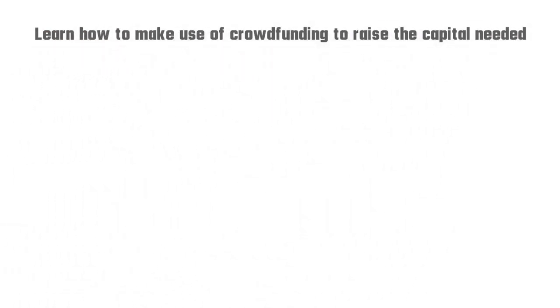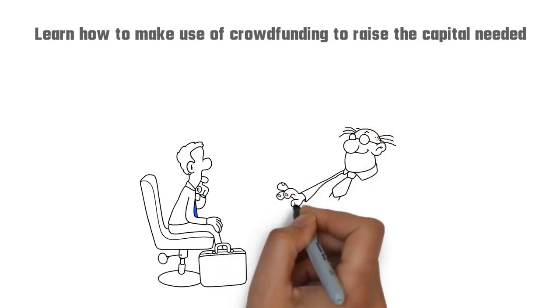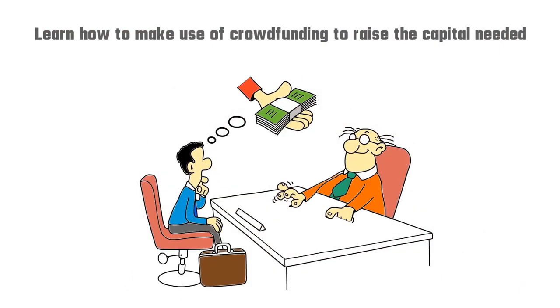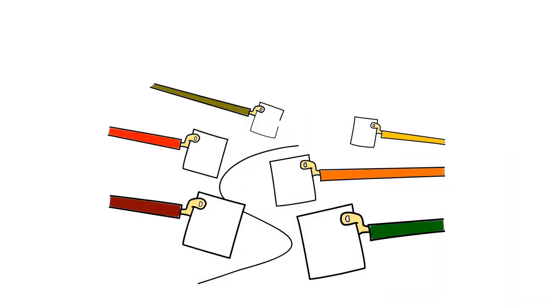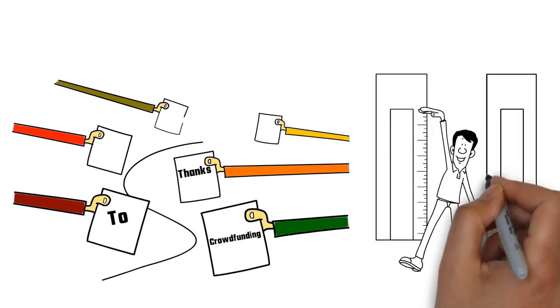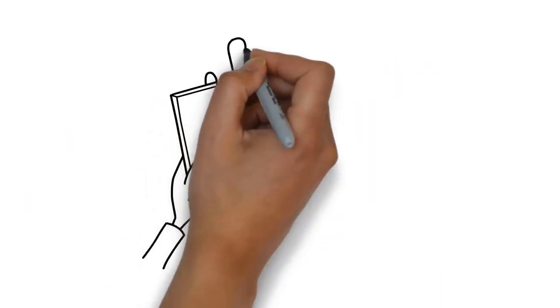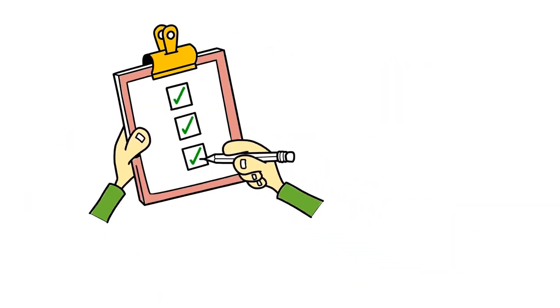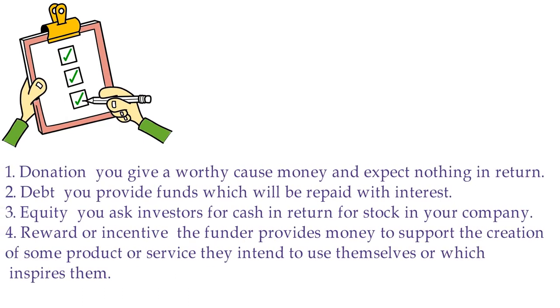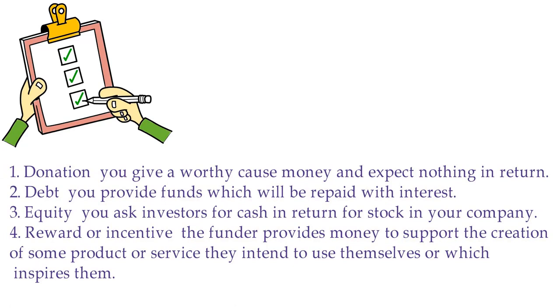Learn how to make use of crowdfunding to raise the capital needed. One of the greatest limits to starting a new business has always been the ability to raise the money required to operate. In today's economy, what has changed thanks to crowdfunding is that millions of backers have already poured billions of dollars into startups through crowdfunding, and this trend is going to rise exponentially. The four main types of crowdfunding proposed by the authors, each based on what the investor receives in return for contributing to fund a campaign, are: Donation - you give a worthy cause money and expect nothing in return. Debt - you provide funds, which will be repaid with interest. Equity - you ask investors for cash in return for stock in your company. Reward or incentive - the funder provides money to support the creation of some product or service they intend to use themselves or which inspires them.